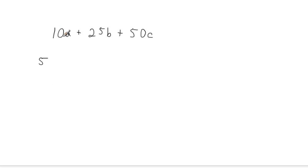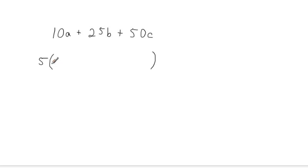Since there are three terms in this original polynomial, we need to make it so that the new polynomial will also have three terms. We can accomplish that by multiplying this 5 by a polynomial that will have three terms. You can think of factoring as the reverse of the distributive property. What we're going to be doing is taking this polynomial and figuring out how we could have distributed a 5 to some polynomial inside these parentheses in order to get the original polynomial that we started with.